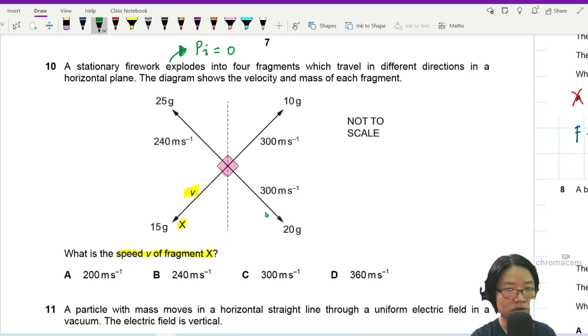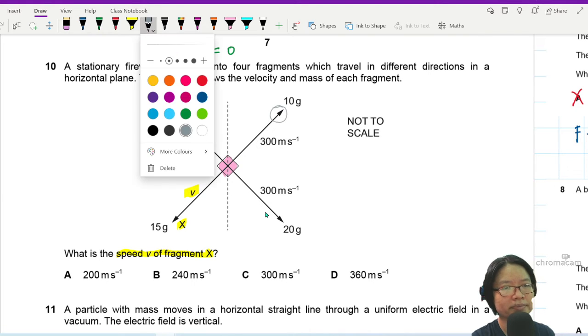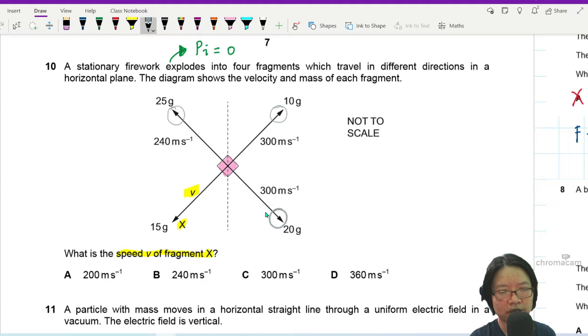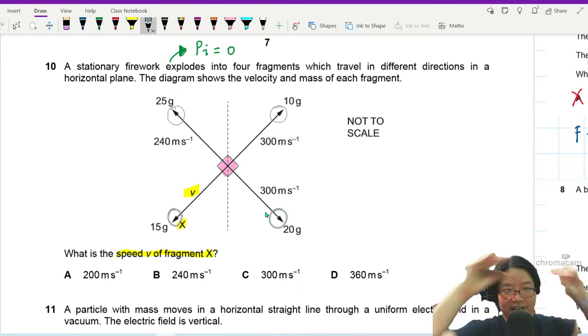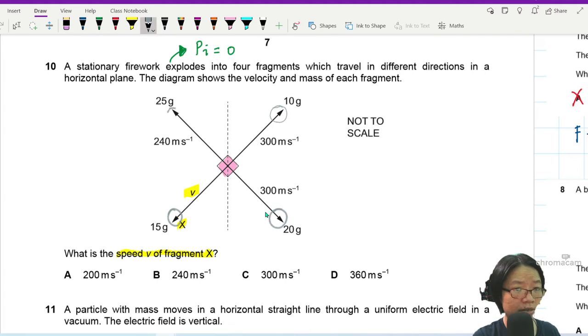You can think about the four pieces of firework. Let me try to draw them. So you have this 25 gram, this 10 gram, 20 gram, and 15 gram. They will fly in four directions. So they will have different speeds. But it just means that there is a force. The force that is pushing on this 25 gram is equal in magnitude and opposite in direction to the force that is pushing on the 20 gram. F1, F2.